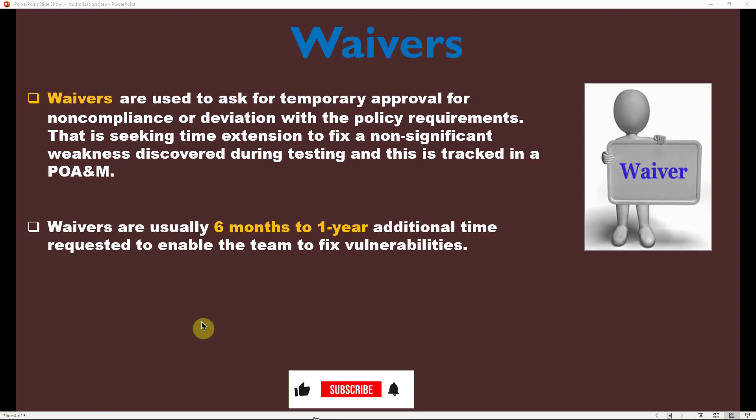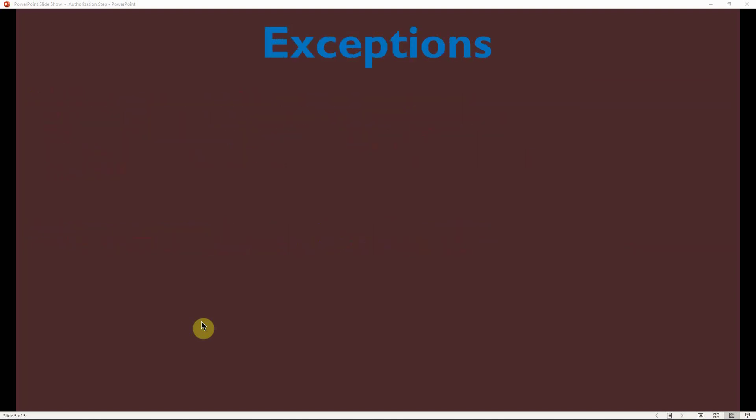Waivers are usually six months to one year of additional time requested to enable the team to fix vulnerabilities. You can request an extension from six months to a year for vulnerability remediation. After the initial period, depending on the agency's policy, you can request another six-month extension on your waiver if you cannot complete the remediation within the first period.